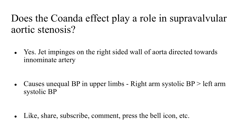Finally, does the Coanda effect play a role in supravalvular aortic stenosis? In supravalvular AS, the blood jet impinges on the right-sided wall of the aorta, directed towards the innominate artery, with a preferential flow of blood towards the right subclavian and the right common carotid arteries. This leads to unequal blood pressure in the upper limbs, with the right arm systolic BP being greater than the left arm systolic blood pressure.